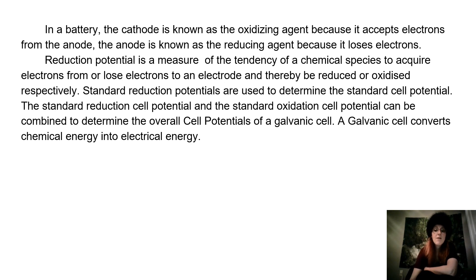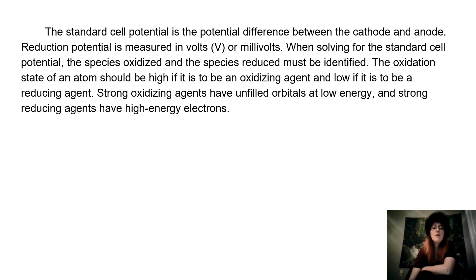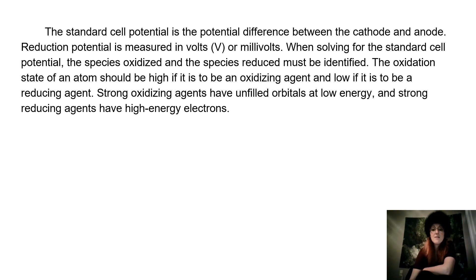A galvanic cell converts chemical energy into electrical energy. The standard cell potential is the potential difference between the cathode and anode, and is measured in volts or millivolts. When solving for the standard cell potential, the species oxidized and the species reduced must be identified. The oxidation state of an atom should be high if it is to be an oxidizing agent, and low if it is to be a reducing agent.